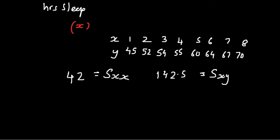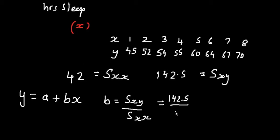Now, if you are trying to figure out the line of best fit, the general equation looks something like this. Now, b is the gradient and a is the intercept. To figure out b, the gradient, you divide sxy by sxx. So let's see what that is: that's 142.5 divided by 42. That's equal to 3.39.